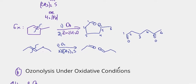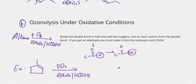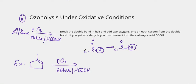Now let's go ahead and look at ozonolysis under a second set of conditions, which is called oxidative conditions. So here the second reagent would be H2O2/HCOOH. And basically here almost the same thing happens. We still break the double bond in half and we still add two oxygens, one on each carbon from the double bond.